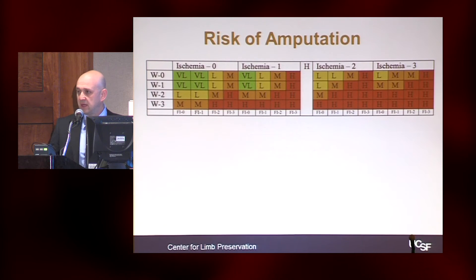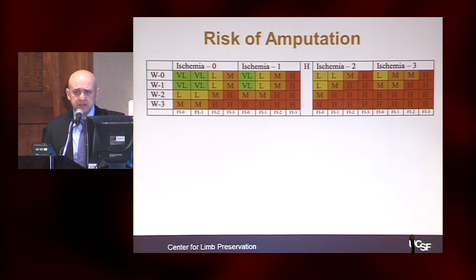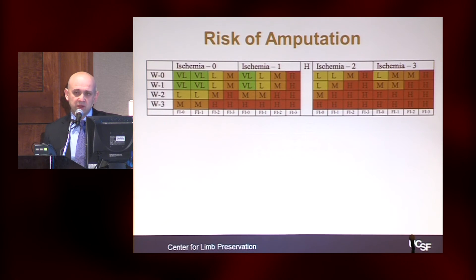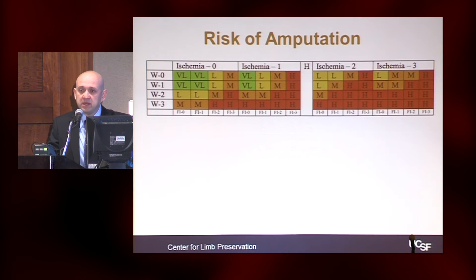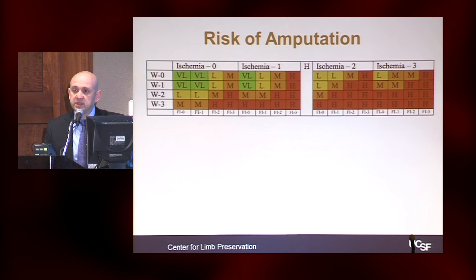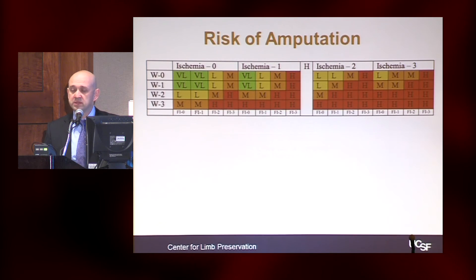When you put it all together in table form, it may look a little complicated at first. But the green boxes represent a very low risk for amputation — stage one. Yellow is low risk, stage two. Orange boxes are moderate risk for amputation, stage three. And anything falling into the red boxes is stage four, the highest risk for amputation.